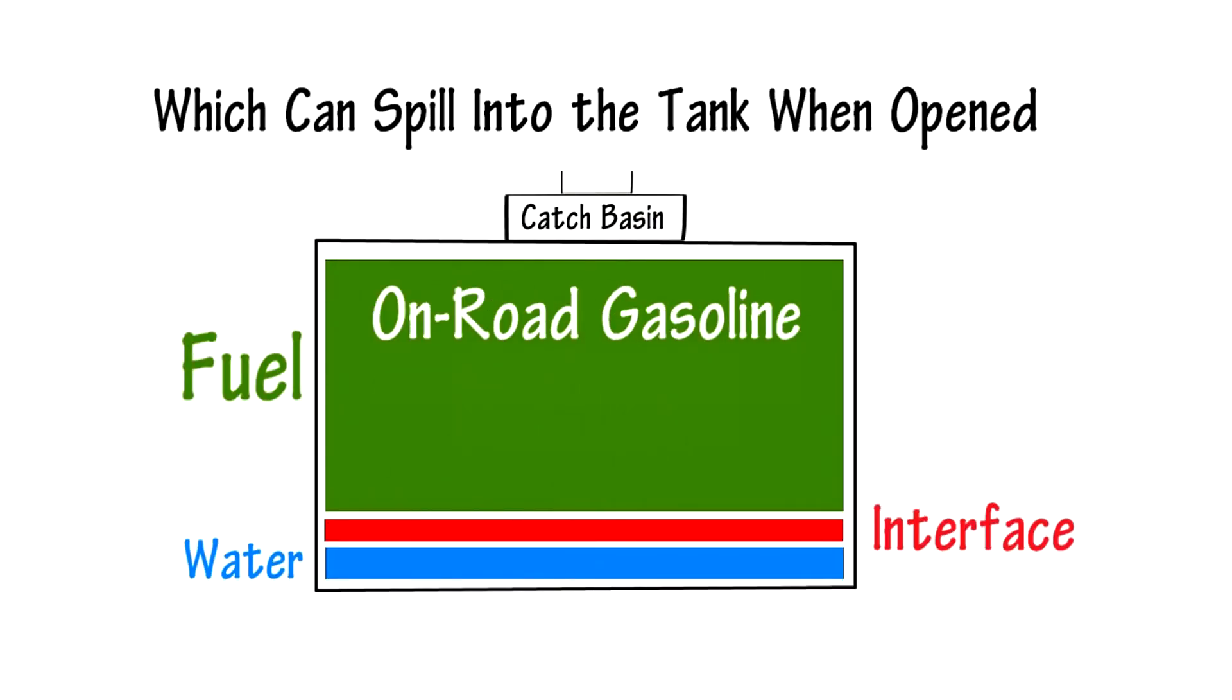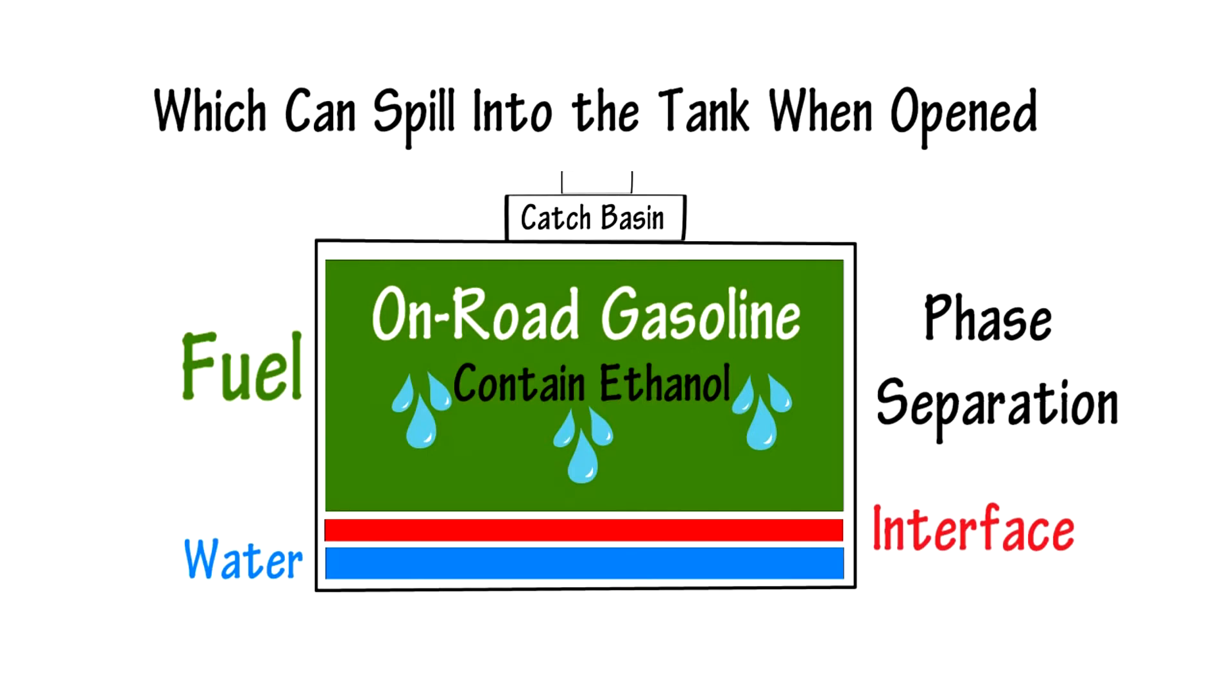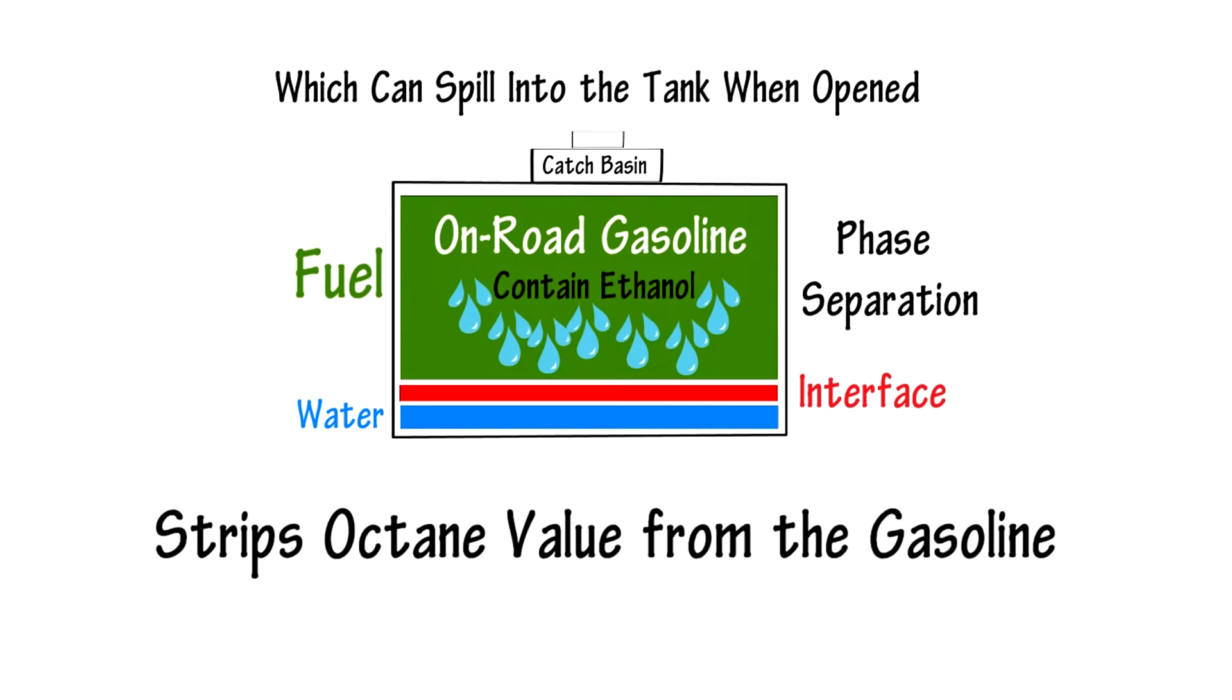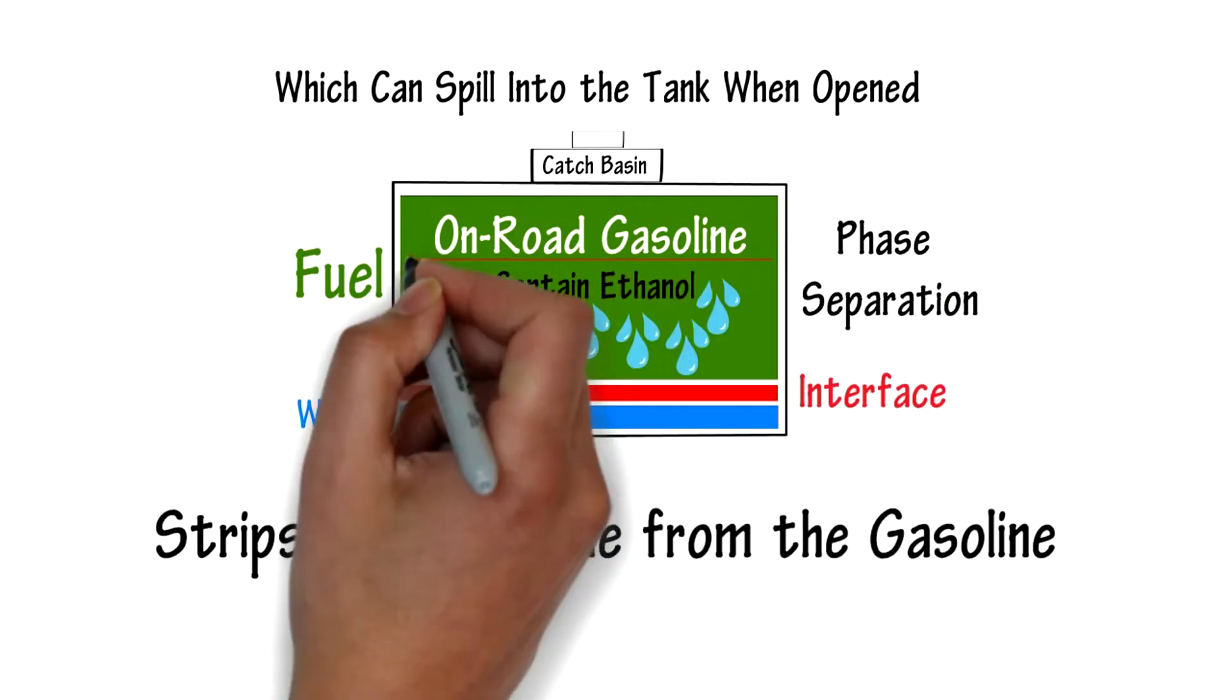Any stored on-road gasoline is going to contain ethanol. Ethanol attracts water and runs the risk of phase separation when too much water is absorbed, causing the ethanol to separate and drop out. This strips octane value from the gasoline and leaves you with a layer of poor gas on top and ethanol plus water on the bottom, neither of which burns very well in an engine.